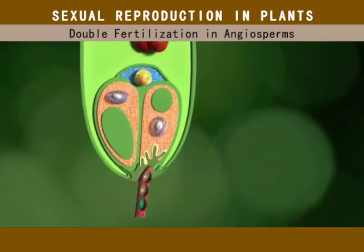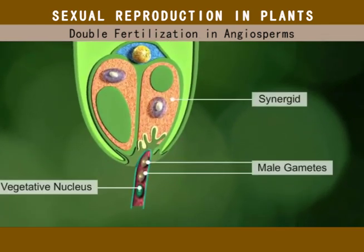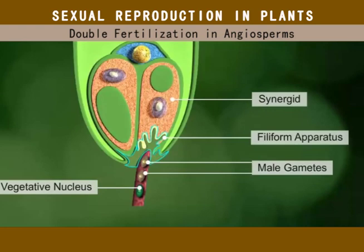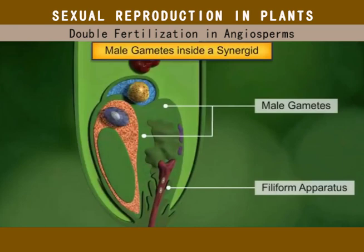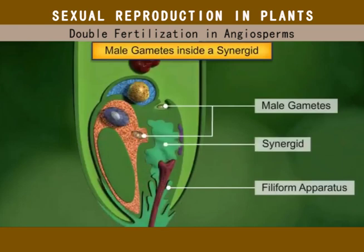The pollen tube enters one of the synergids through the filiform apparatus, during which it ruptures and releases the male gametes into the synergid cytoplasm.